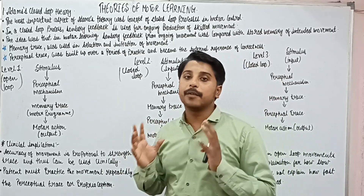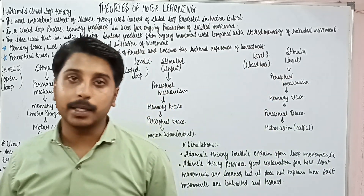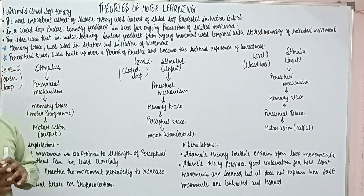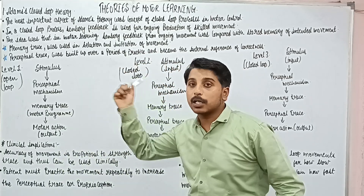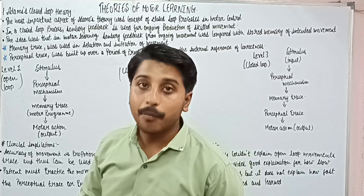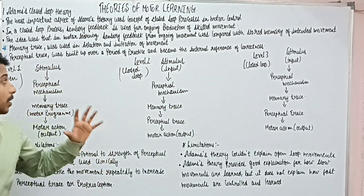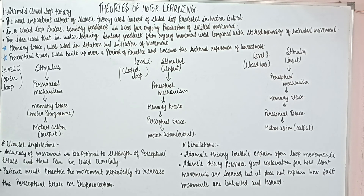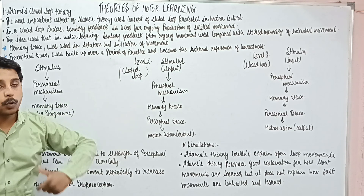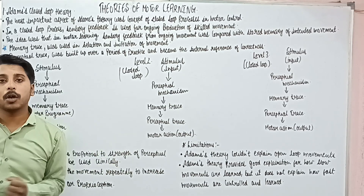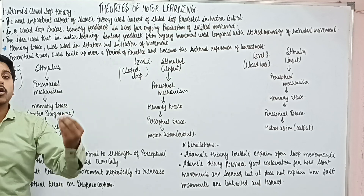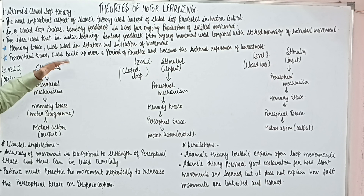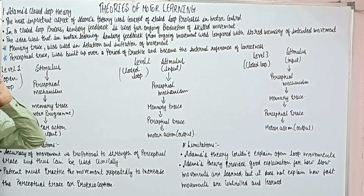Hello Physios, I welcome you all to our channel Physio with David. Today I am here to make you understand the next part, that is the Adams Closed Loop Theory. My name is Vijay Kumar, and let's get started. According to Adams there are 3 levels — level 1, level 2, and level 3 — that is 3 levels of motor learning. First was open loop while second and third were closed loop models. We will just have a brief introduction from this theory, then I will give you examples to understand each of them.